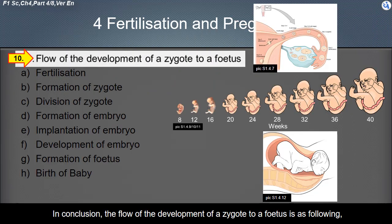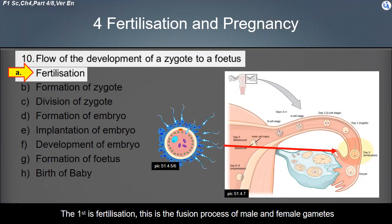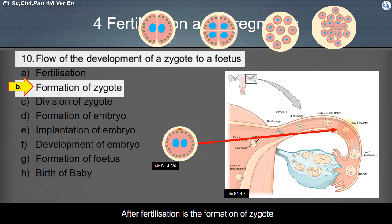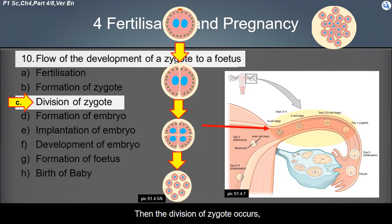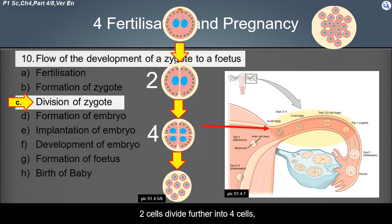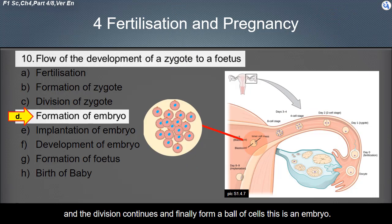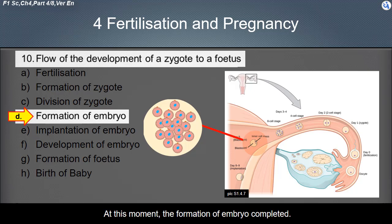In conclusion, the flow of the development of a zygote to a fetus is as follows. The first is fertilization — the fusion process of male and female gametes. After fertilization is the formation of the zygote. Then the division of the zygote occurs, where the zygote divides into two cells, then four cells, then eight cells, and the division continues to finally form a ball of cells — the embryo. At this point, the formation of the embryo is completed.